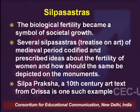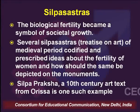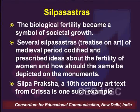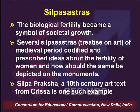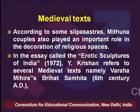Coming to the issue of Silpa Shastras — how they discussed construction activity and architectural styles — biological fertility was made a symbol of societal growth. Several Silpa Shastras, which were treatises on art of the medieval period, codified and prescribed specific ideas about the fertility of women and how it should be depicted on monuments. One such example is the Silpa Prakash, a 10th-century art text from Orissa. According to several Silpa Shastras, the Mithuna couples played a very important role in the decoration of religious spaces.